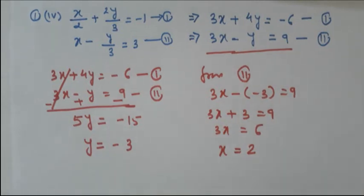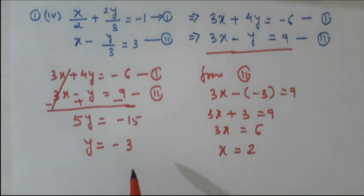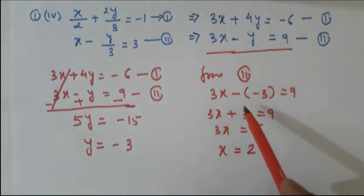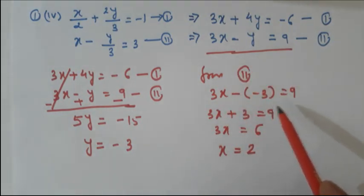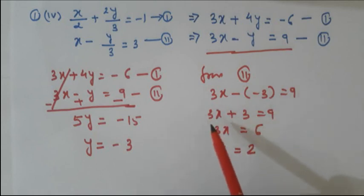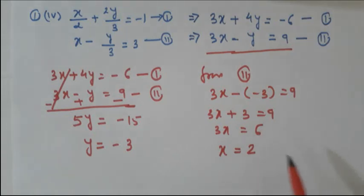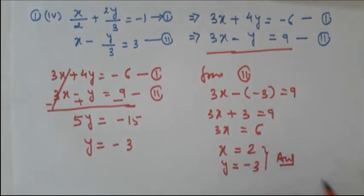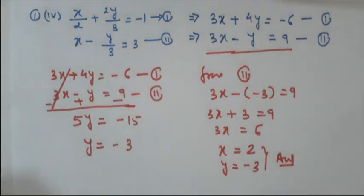So x is equal to 2 and y is equal to minus 3. We can verify: from the second equation, 3(2) minus (minus 3) = 6 plus 3 = 9. Correct. This is the answer for exercise 3.4, question number 1, part 4: x = 2 and y = minus 3.